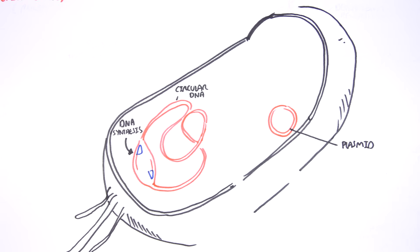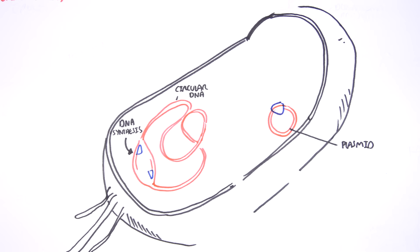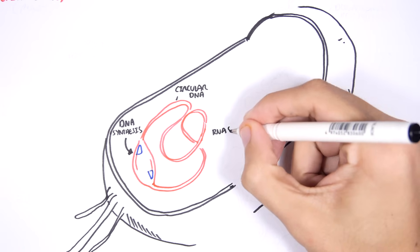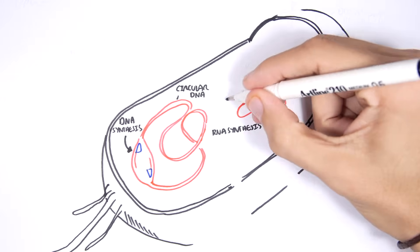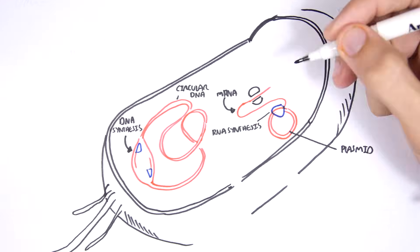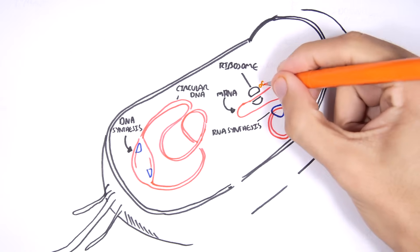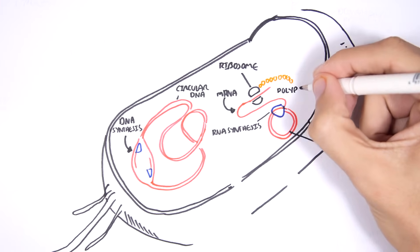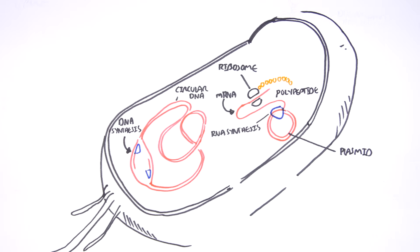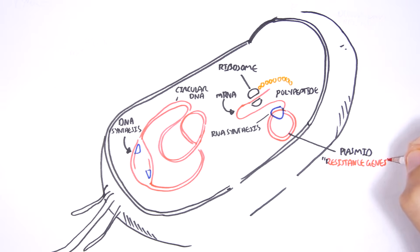For the plasmids to make these resistant things, they usually have to incorporate into the main DNA. But here, I am showing that the plasmid is synthesizing mRNA straight away. This mRNA will then be read by the ribosome to make polypeptides — to make proteins. And these proteins are what will become structures or enzymes that will help the bacteria become resistant to antibiotics.